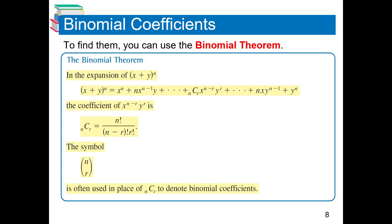When we look at the binomial expansion of (x + y)ⁿ, the exponents of x decrease from n — that is, n, n−1, n−2, and so on. The formula for the binomial coefficient nCr is: nCr = n! / [(n − r)! · r!]. This is the same combination formula. For example, 8C2: n = 8, r = 2, so it is 8! / (6! · 2!) = (8 × 7) / (2 × 1) = 56/2 = 28.